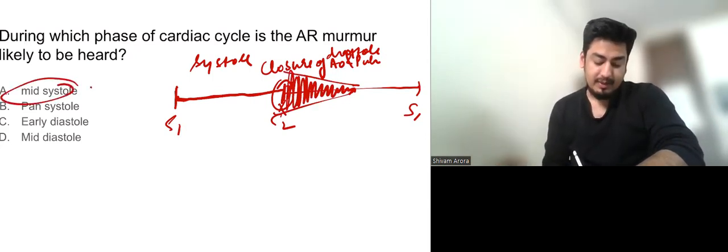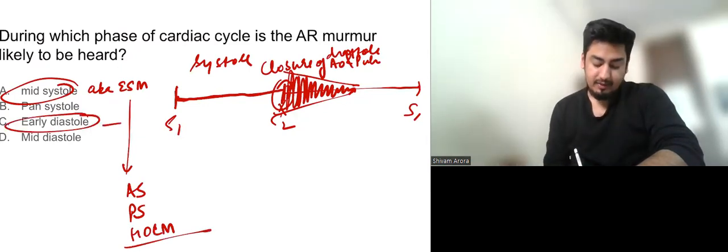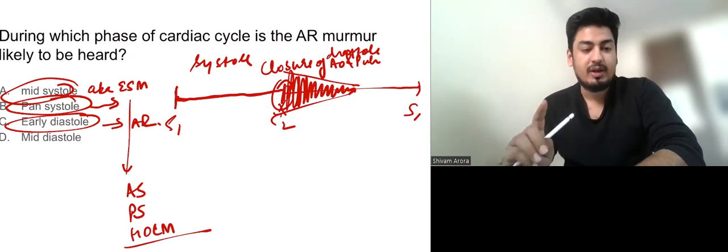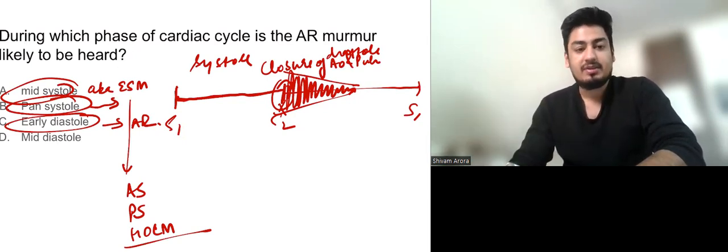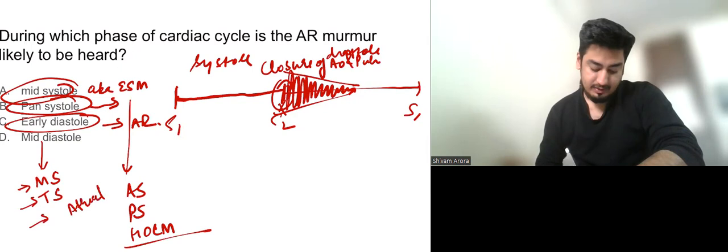Again mid systolic murmurs. Mid systolic murmurs are also known as ejection systolic murmurs. And the causes of ejection systolic murmur are AS, PS and HOCM. Early diastole we have already discussed the murmur of AR. Pan systolic murmurs. There are three pan systolic murmurs in cardiology. You have to tell me in the comment section which are the pan systolic murmurs. And mid diastole we have mitral stenosis, tricuspid stenosis and atrial myxoma.